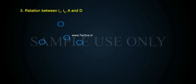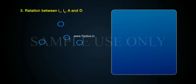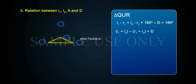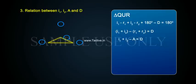Relation between I1, I2, A, and D. In the triangle QUR: (I1 − R1) + (I2 − R2) + (180° − D) = 180°. Simplifying: I1 + I2 − (R1 + R2) = D. Substituting R1 + R2 = A: I1 + I2 − A = D, therefore I1 + I2 = A + D — Equation 4.